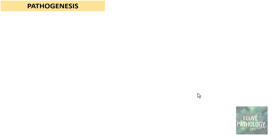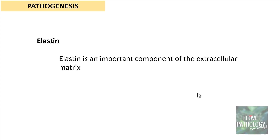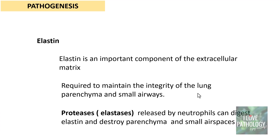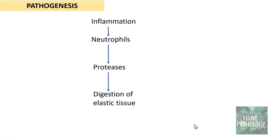Now let's look into the pathogenesis of emphysema. Elastin is an important component of the extracellular matrix in the lung parenchyma and distal air spaces; it is required to maintain the integrity of lung parenchyma and small airways. Elastin is destroyed by elastases released by neutrophils. During inflammation, neutrophils release these proteases or elastases, which digest elastin and thereby destroy the parenchyma and small air spaces — this is the basic mechanism of emphysema.